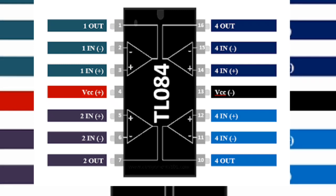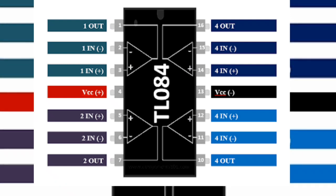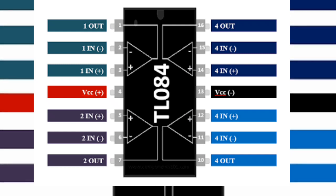Now you can see the IC — this is the TLO84. This is the TLO84 pin configuration.